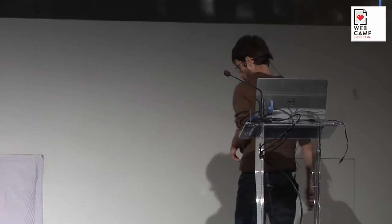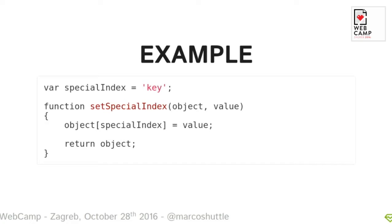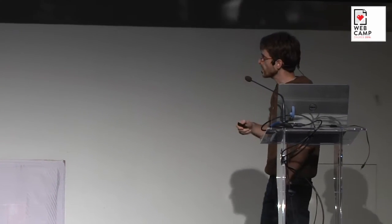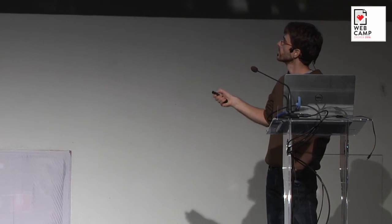To be more practical, here's a piece of JavaScript code. We have a function setSpecialIndex taking an object and a value, setting a specialIndex parameter with the value received, and returning that object. If you look closely, we're doing two things not allowed in functional programming: we use specialIndex which is never passed to the function — it's defined in a more global context. And in JavaScript, when you set a parameter of an object, you're actually modifying it, altering the state of your application.